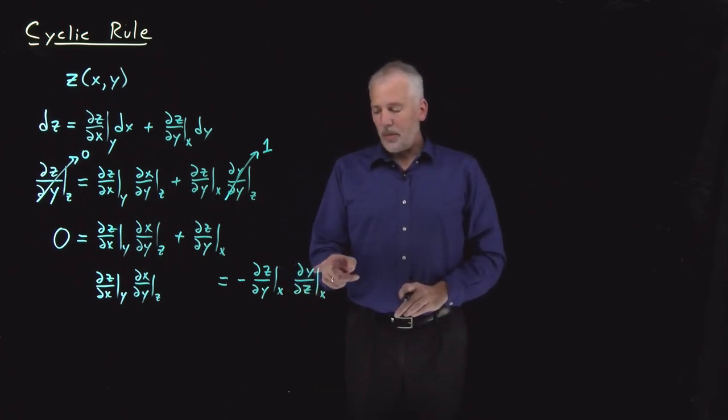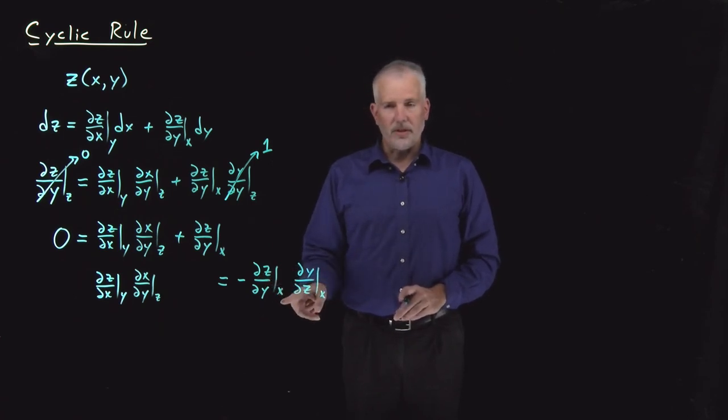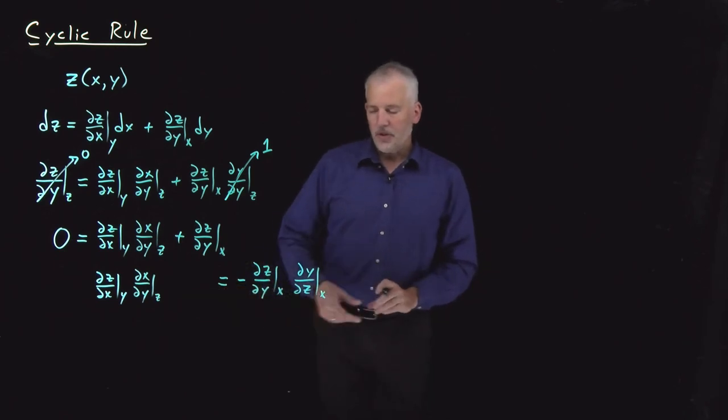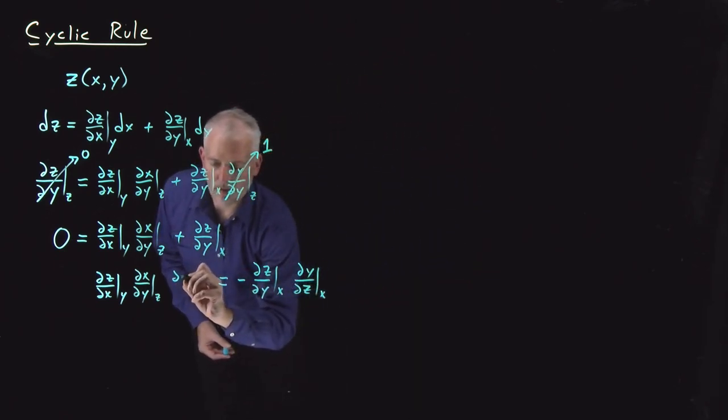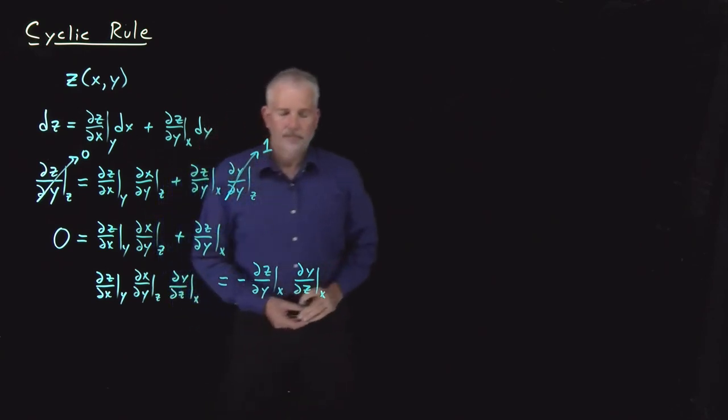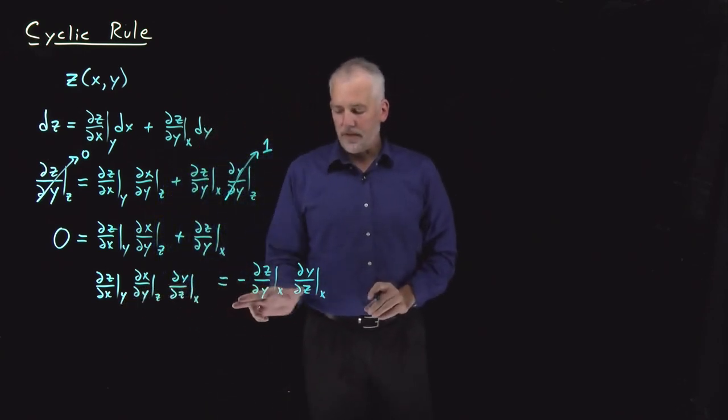I did that because ∂y/∂z at constant x is the reciprocal of this one. So after I multiply these two together, they're going to cancel themselves out. But I have to make sure and do the same thing on both sides. So the ∂y/∂z at constant x, I put on the right. I have to also include one on the left.